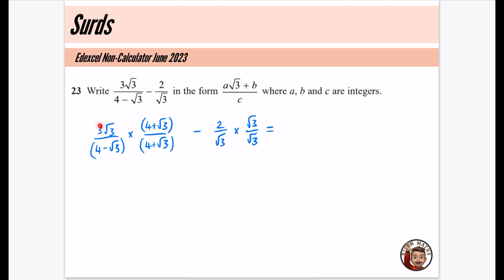For the numerator, I'll have the 3√3 times by the 4, which is 12√3. And then I have 3√3 multiplied by √3. Well, first of all, just do the root 3s. √3 times √3 is just 3. And there's another 3. So 3 times 3 is 9. So that means that we have a plus 9 for that bit.